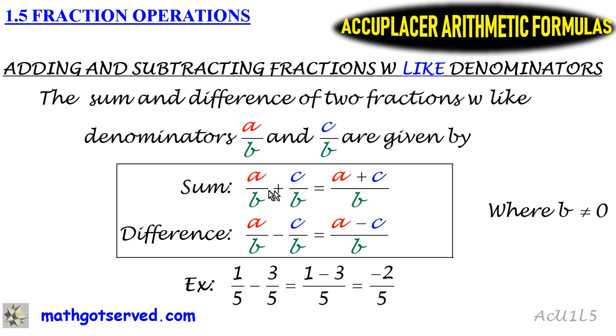For the sum, we have two fractions A over B and C over B. The sum is going to be A plus C over B. The rule is you add the numerators and keep the denominator. So when you add two fractions with the same denominator, you add the numerators and keep the denominator.